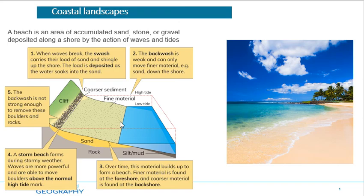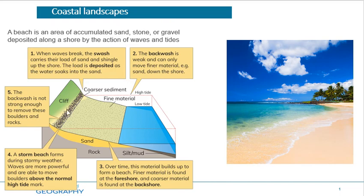The coarser, heavier rocks and material are found at the backshore. Why? Think about it: the wave comes in and stops, and it does not have the energy to carry its heavier load — rocks and pebbles — so they get dropped there. Then as the wave slowly retreats, it starts to drop other things like finer sand and shingle lower down.